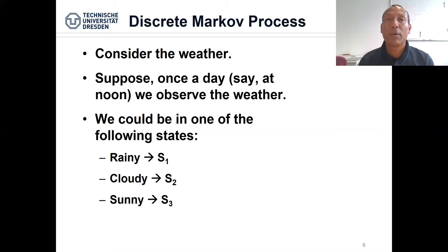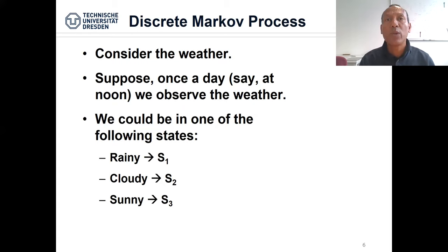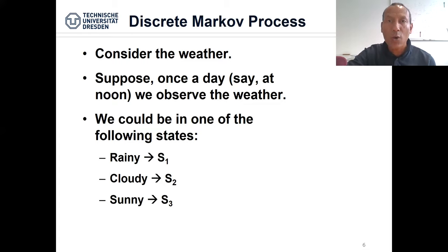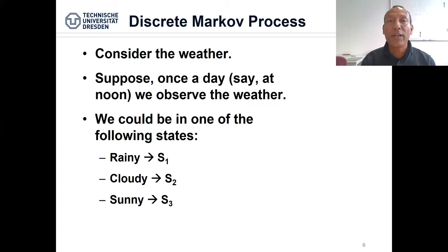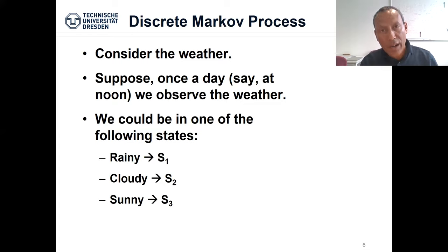These measurements are analog signals, but we want to map them into one of the following discrete states. We may say the measurement represents rainy, cloudy, or sunny weather — one of these discrete states. This is the first step to begin modeling a system: we convert an analog signal into discrete states.